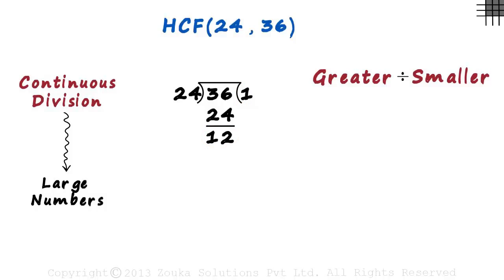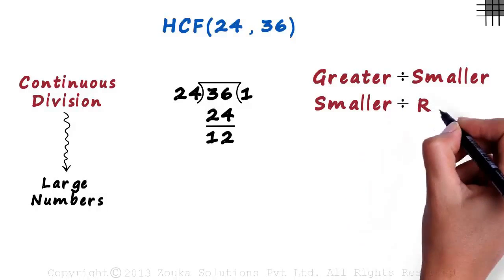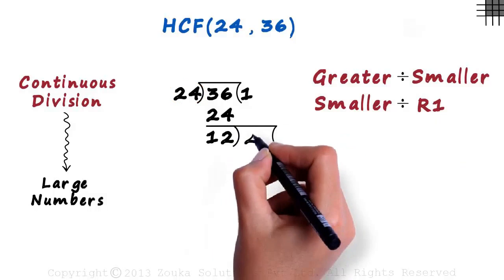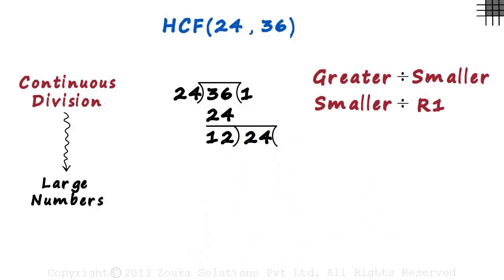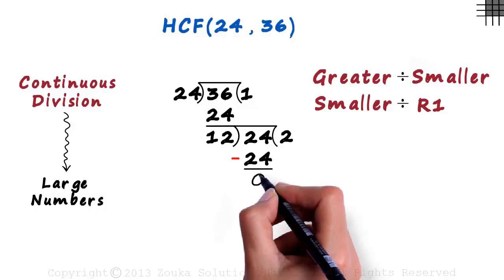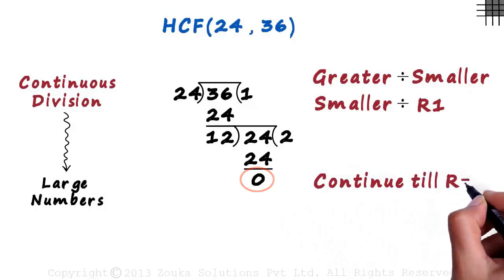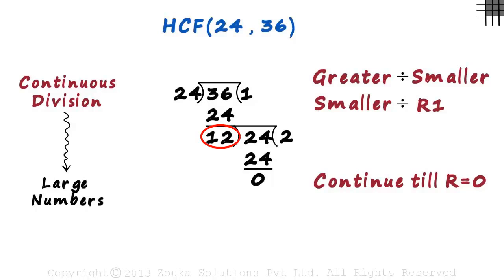We call this the first remainder as we get many remainders in this method. In the second step we divide the smaller number by the first remainder. The smaller number is 24, so we write 24 here. We are dividing the smaller number by the first remainder. 12 times 2 is 24, and 24 minus 24 is 0. We continue this till we get the remainder as 0. And guess what? We already have the HCF. The final divisor becomes the HCF. So here the HCF will be 12.